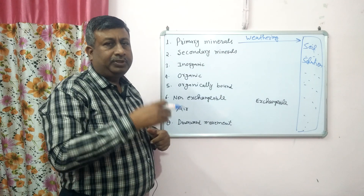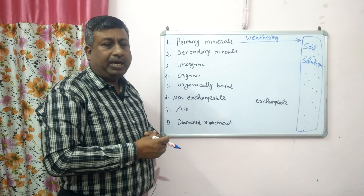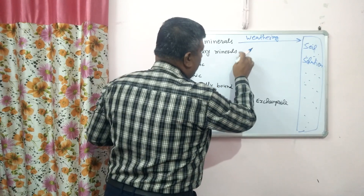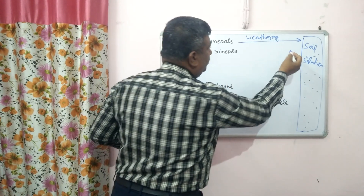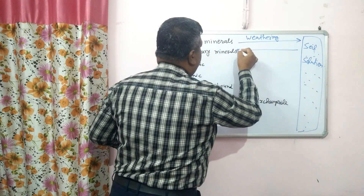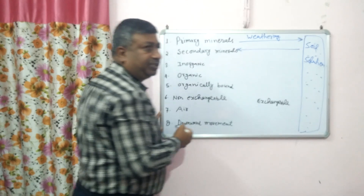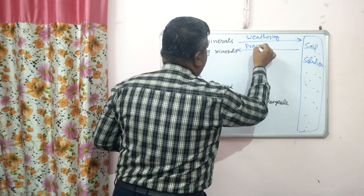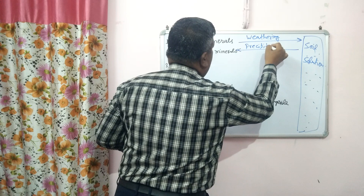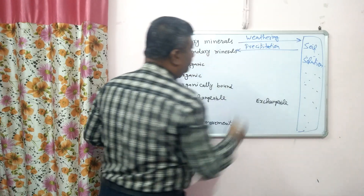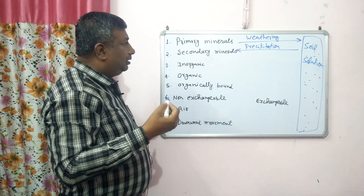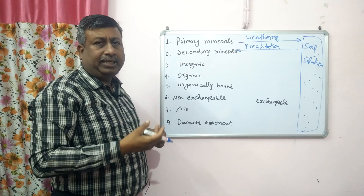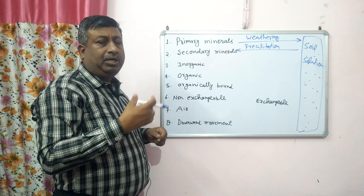By the process of weathering, nutrients are released from primary minerals. Secondary minerals also contribute to the soil solution. If the nutrient is present in soil solution and precipitates, that is known as precipitation. By the process of precipitation, nutrients are converted into secondary minerals. Secondary minerals are generally hydroxides, oxides, carbonates, sulfates, chlorides, etc.